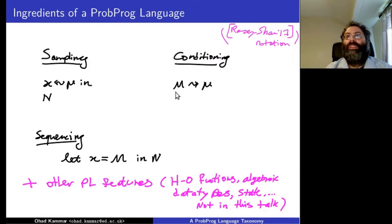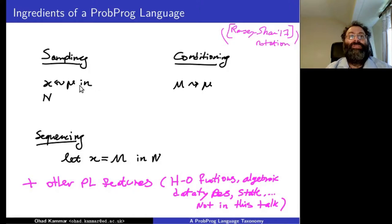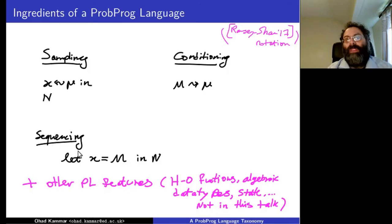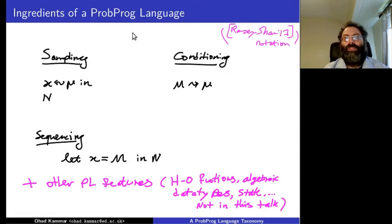I'm adopting a notation by Ramsey and Shan where we add a little arrow on the sampling symbol, indicating direction: sampling means binding a value into x from the distribution, while the reverse arrow means using this value to update the distribution. We also have a sequencing construct, since these are effectful constructs in a functional language. One can add higher-order functions, state, and other effects, but today I'll focus on first-order probability theory.